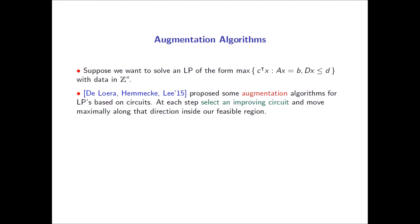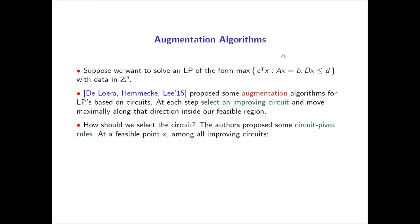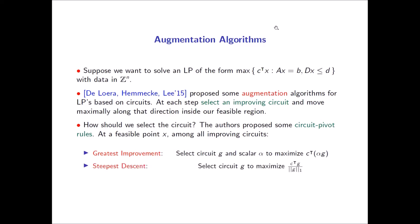At each step, these algorithms select an improving circuit — one that increases the objective function and can be applied with a non-zero step length — and move maximally along that direction inside the feasible region, iterating until reaching an optimal solution. Just as the simplex method requires a pivot rule, a circuit augmentation algorithm requires a rule for deciding which improving circuit to use. The two most relevant pivot rules are: the greatest improvement rule, which selects the circuit step yielding the greatest possible improvement, and the steepest descent rule, which selects the circuit g maximizing cost divided by its one-norm. Throughout this talk, steepness refers to normalizing with respect to the one-norm rather than the usual two-norm.